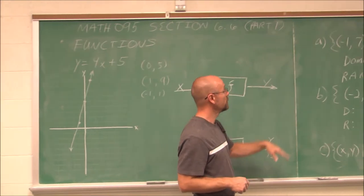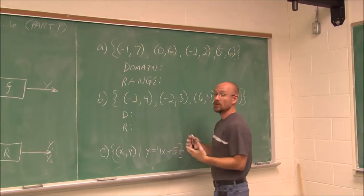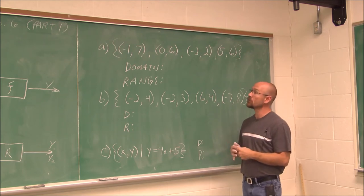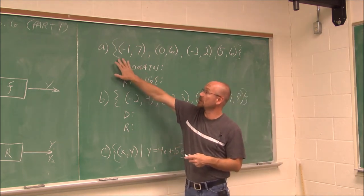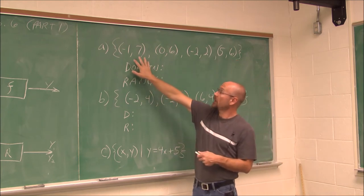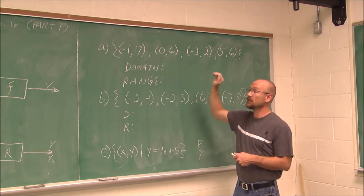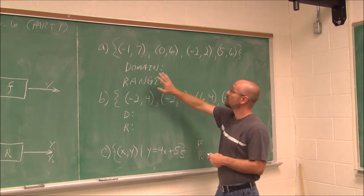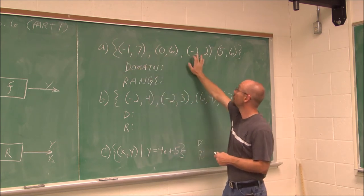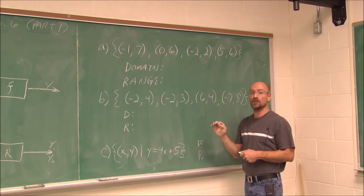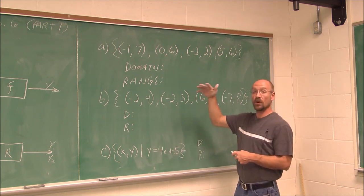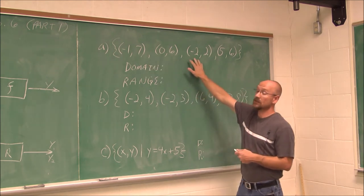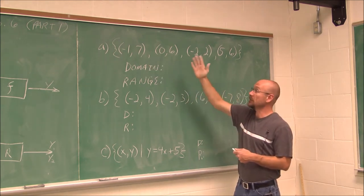Let's look at some examples where we have to define whether it's a function or a relation. We have this set — notice the set notation in braces — a set of points. To determine if this is a function or only a relation, I look at the x values. I have negative 1, 0, negative 2, and 5. Each of my x values are unique. They correspond to a y, and there's no repeating x value. So we can say this is a function because the x's are unique.